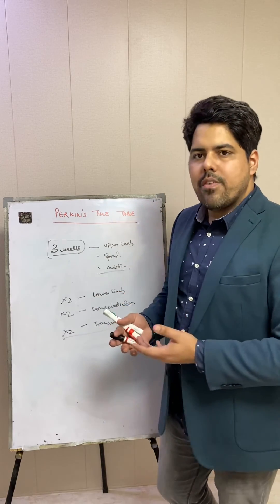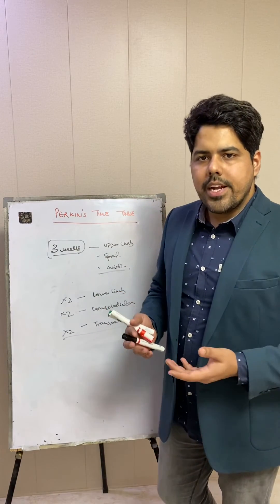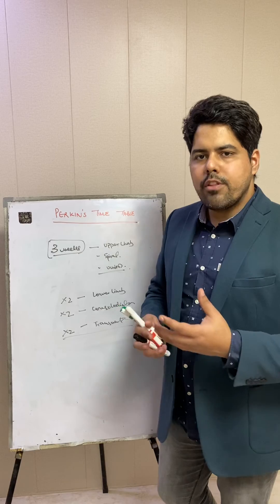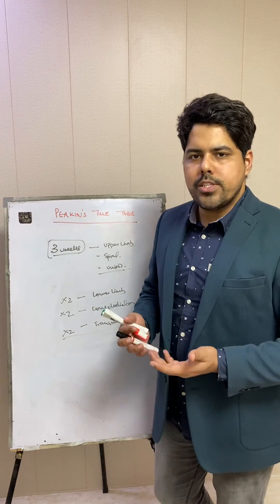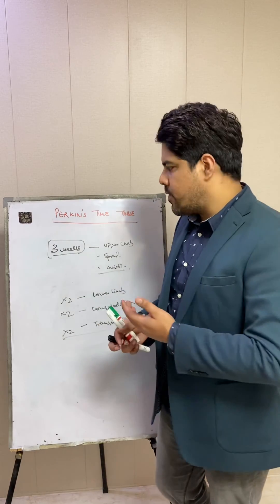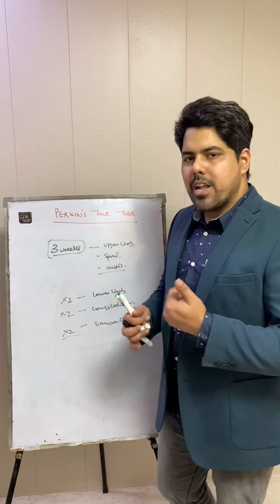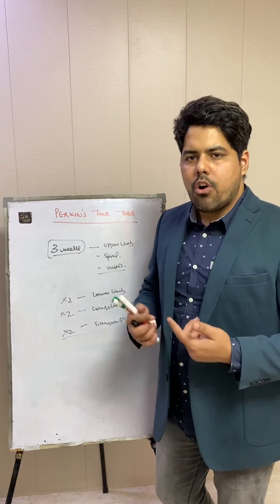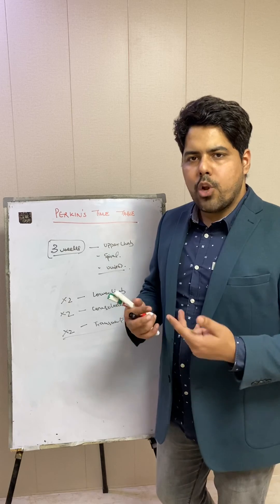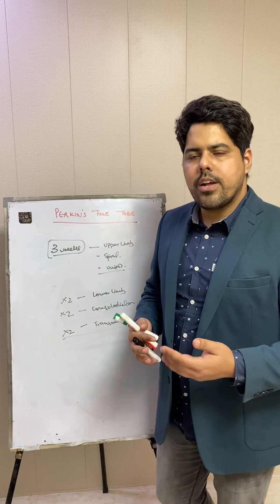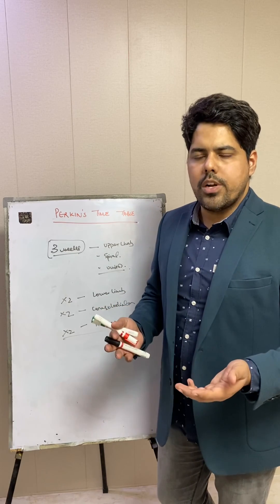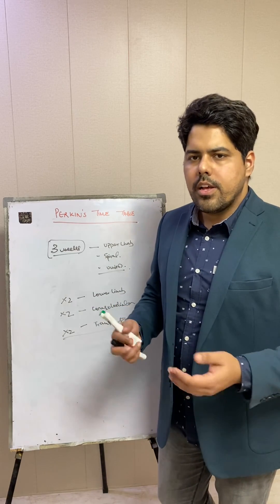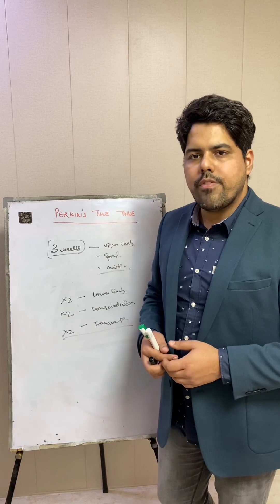So here you can have a rough indicator depending on the various permutations and combinations of these factors: whether it is a spiral fracture of the upper limb, a lower limb fracture, a transverse fracture, or whether you are assessing clinical union versus consolidation of a fracture.